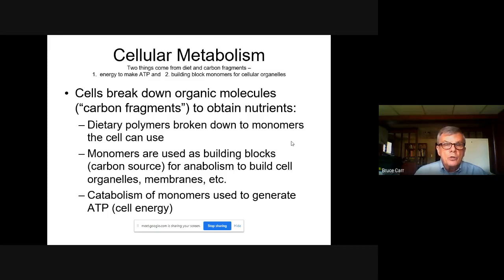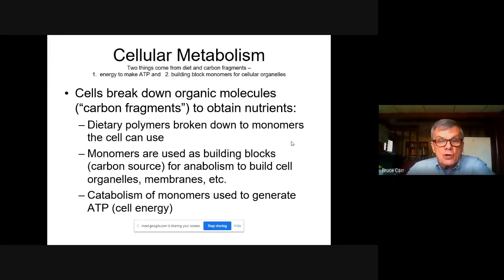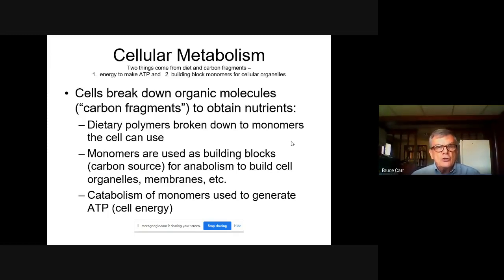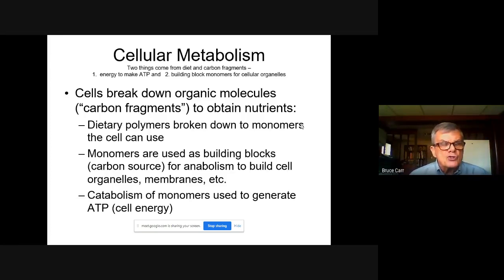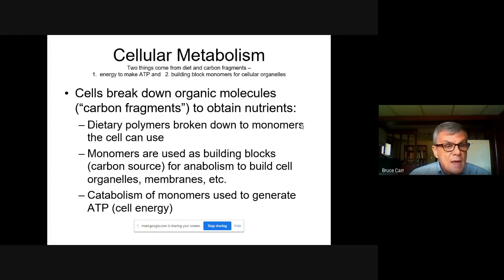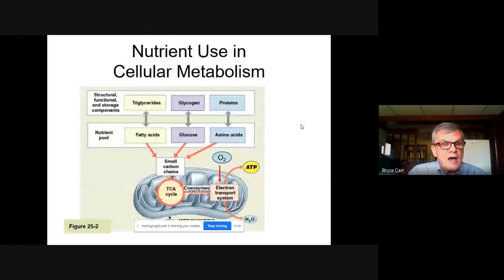An important point: there are two things that come from diet. The carbon fragments we consume contain energy in their cellular bonds to make ATP, and secondly they are the building blocks — monomers — for cellular organelles, cells, organs, and organ systems. We get both the energy and the material to build our body from our diet. We typically illustrate this for glucose, since that's a central carbon fragment and a central nutrient.